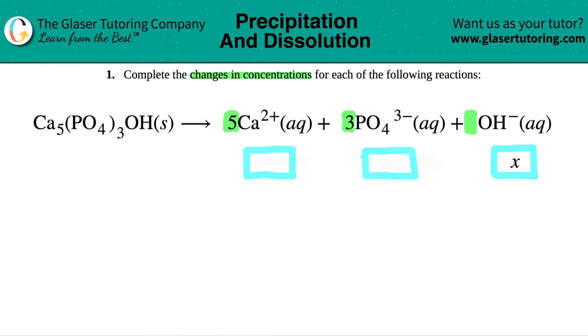But remember, anytime that you don't have a number, you only have one of them. Now that's the reason why the OH- is just an X value, because a one would be dropped down here, meaning that it would change in concentration by one times the X value. But since it's just a one, you don't have to care about the one.